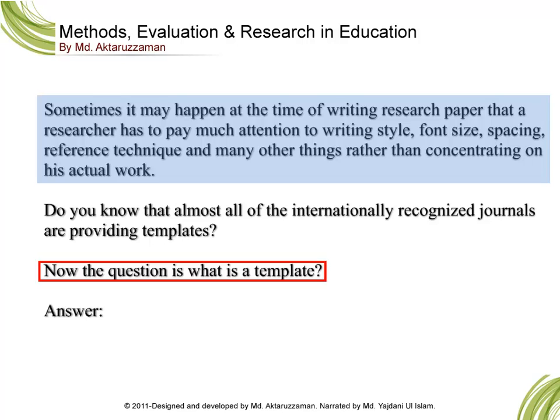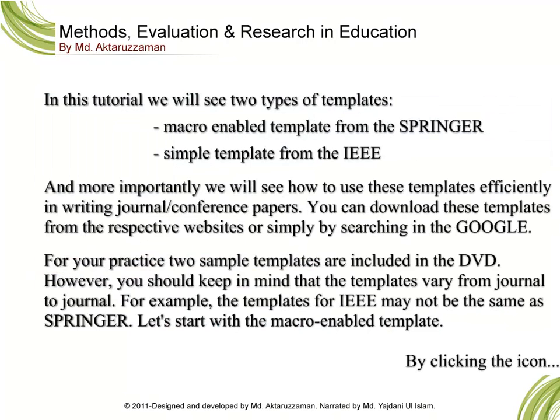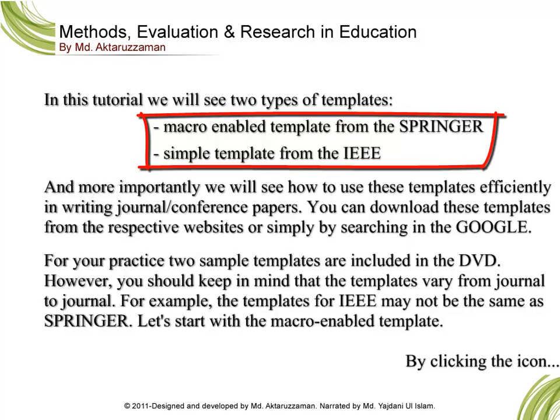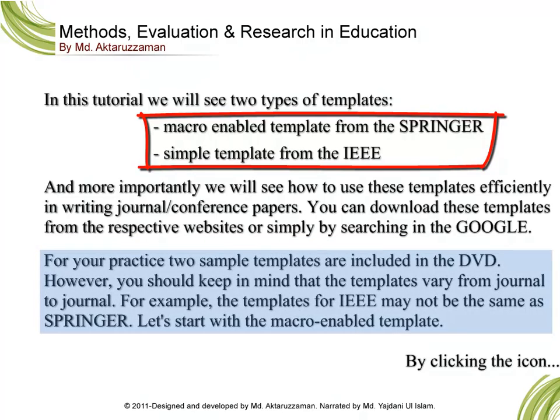The question is: what is a template? Templates are nothing but a standard of writing papers. In this tutorial, we will see two types of templates: a macro-enabled template from Springer and a simple template from IEEE. More importantly, we will see how to use these templates efficiently in writing journal or conference papers. You can download these templates from the respective websites or by searching on Google. Note that templates vary from journal to journal — the IEEE template may not be the same as Springer's.